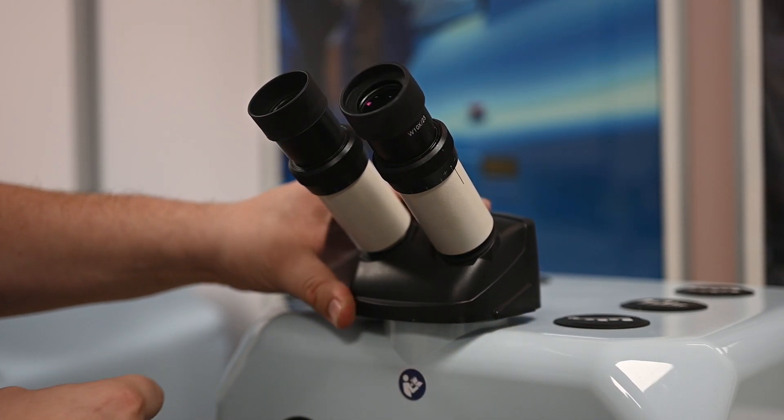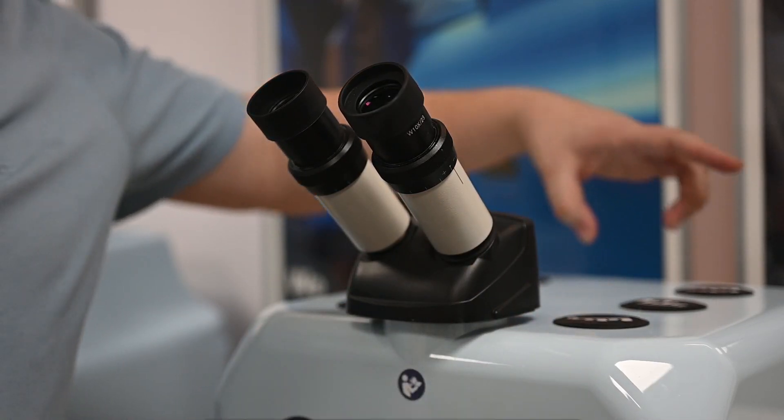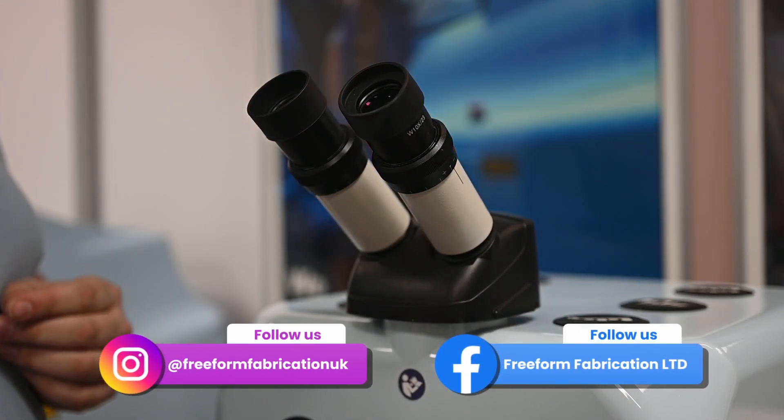So the first thing we want to check is that the scope is screwed on straight. As much as possible, get that screwed on so it's nice and aligned with the rest of the Dado.